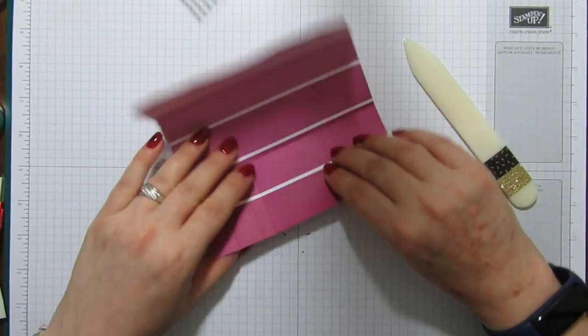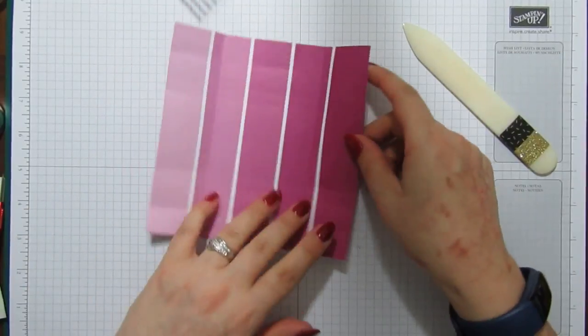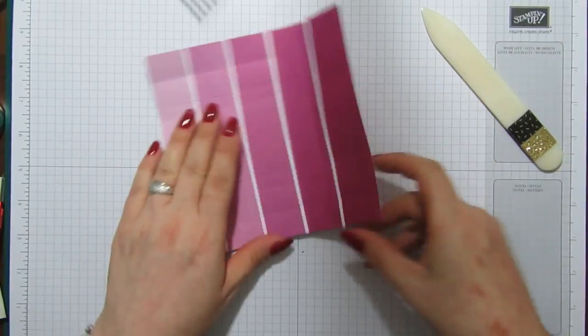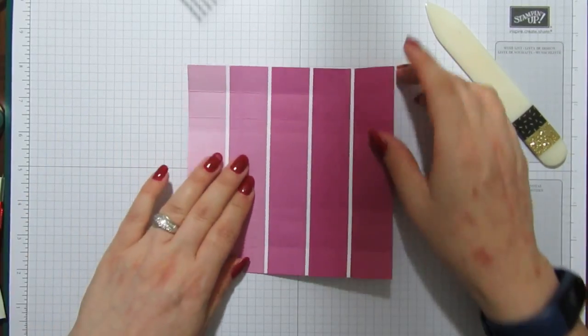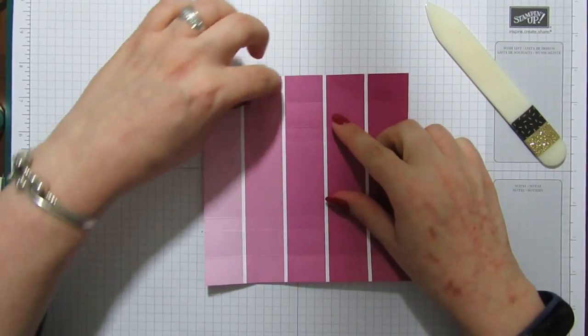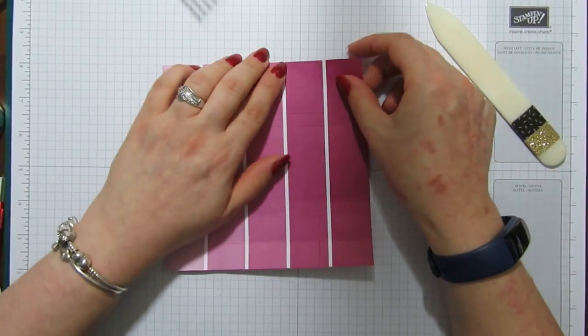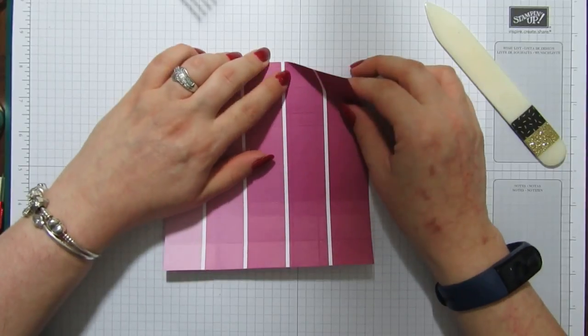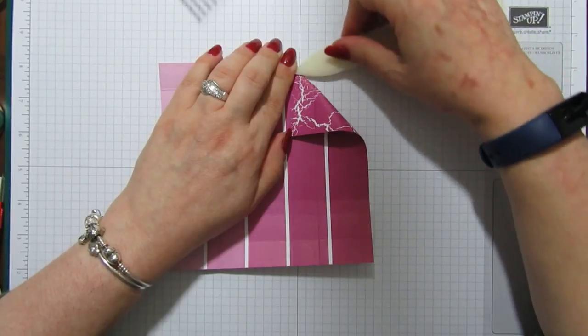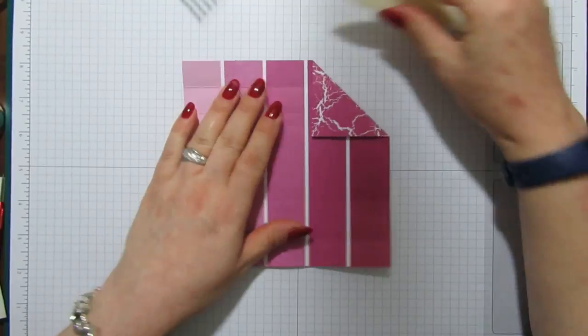All right, so that's all the score lines burnished. You want to turn it where you've got the two wider score lines which are facing you. Then on the four corners you're going to turn this over so it matches with this score line here, so you will end up with that.